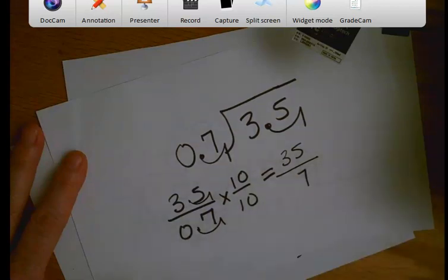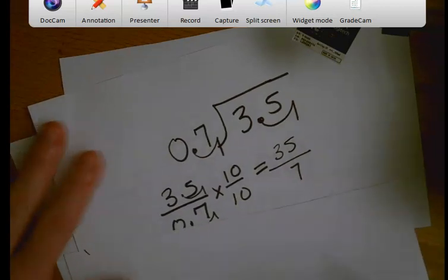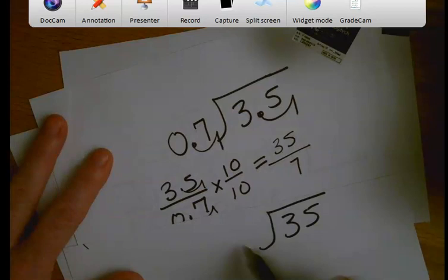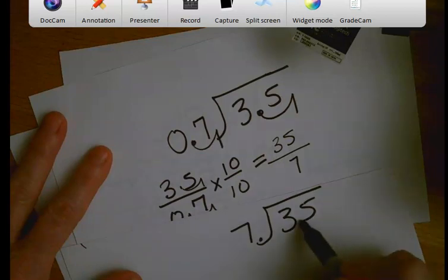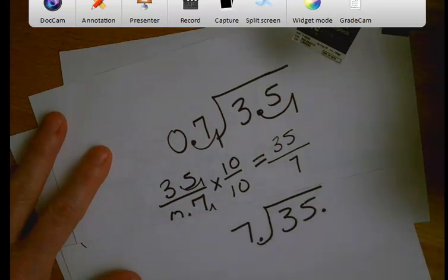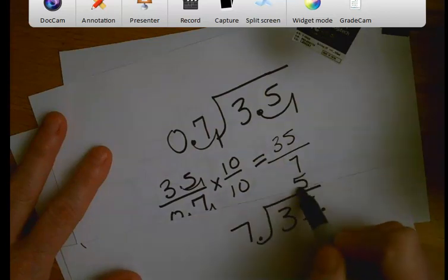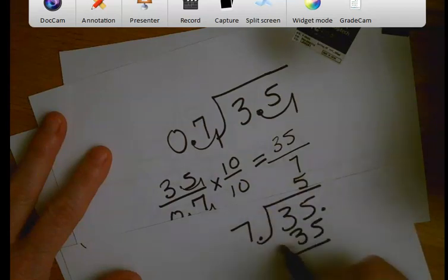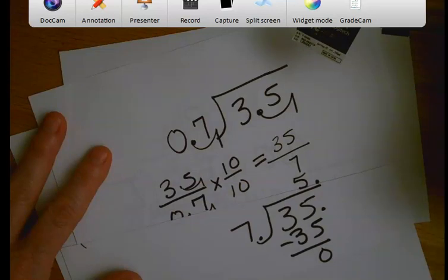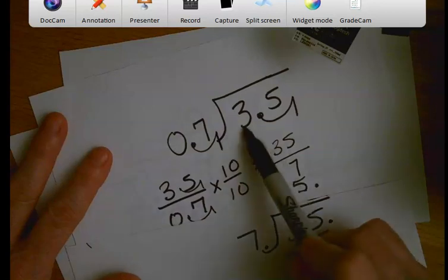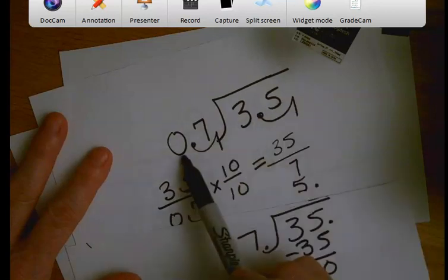So essentially what I'm going to do in this problem is think about it as 35 divided by 7. Because I've moved my decimal point here, and I've moved this decimal point over to the right. Then I'm going to solve it by saying 7 will not go into 3, but it will go into 35 five times. 5 times 7 is 35. I'm done. I have zero left over. Now I still have this decimal point right here that I'm going to move straight up. I'm lining it up into my quotient, and I end up with the answer of 5. So this tells me that 3.5 divided by 0.7 is 5.